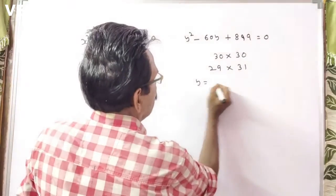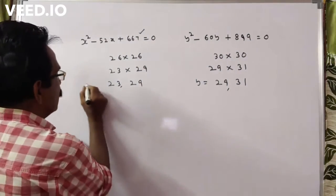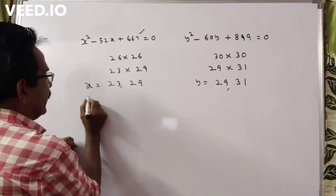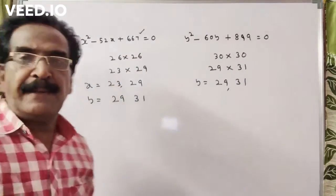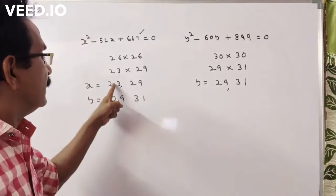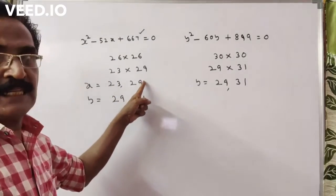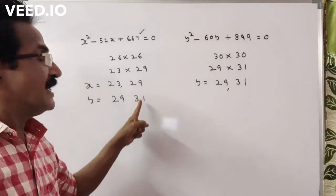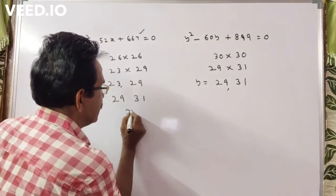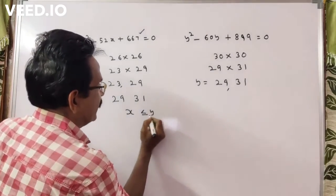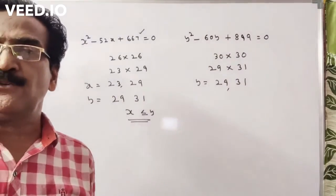So the y values are 29 and 31. X is equal to 23 or 29, and y is equal to 29 or 31. Now let us compare: 23 is less than both 29 and 31. And 29 is less than 31, and equal to 29. So the final relation is x less than or equal to y. Okay friends, thank you, have a nice day.